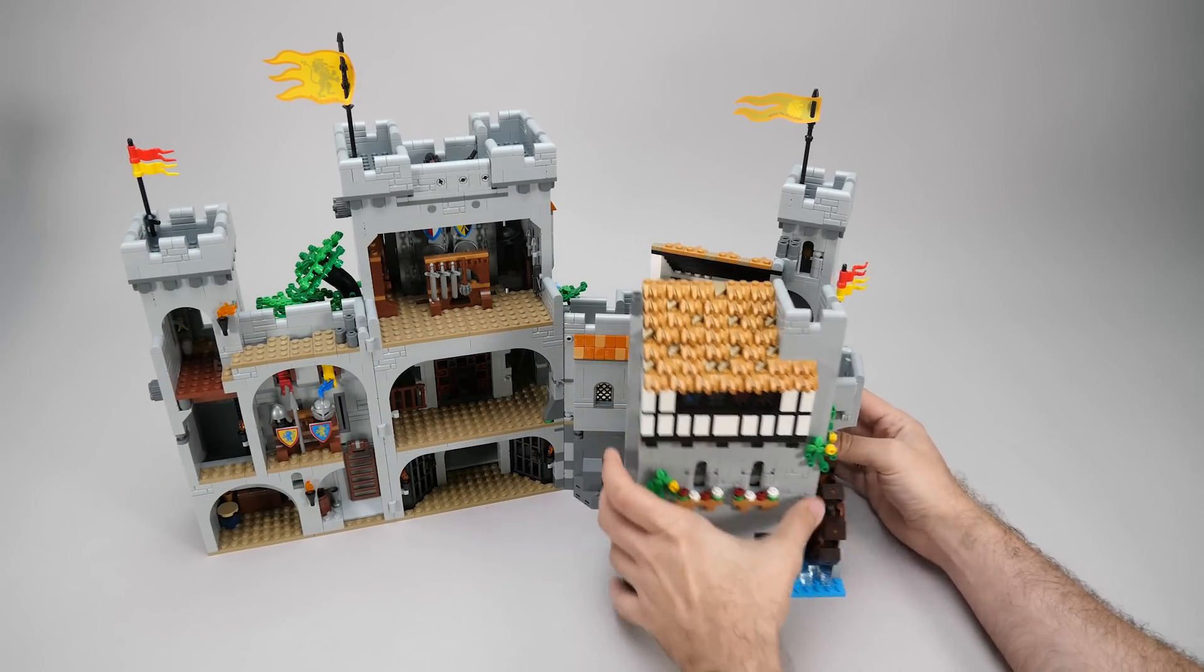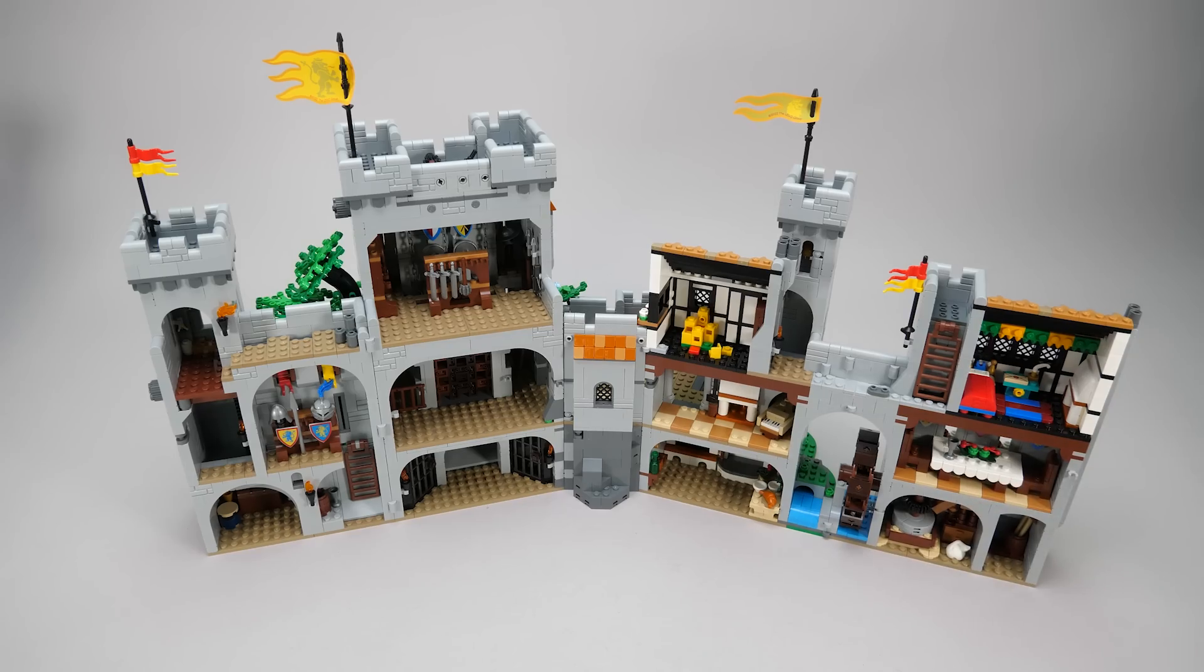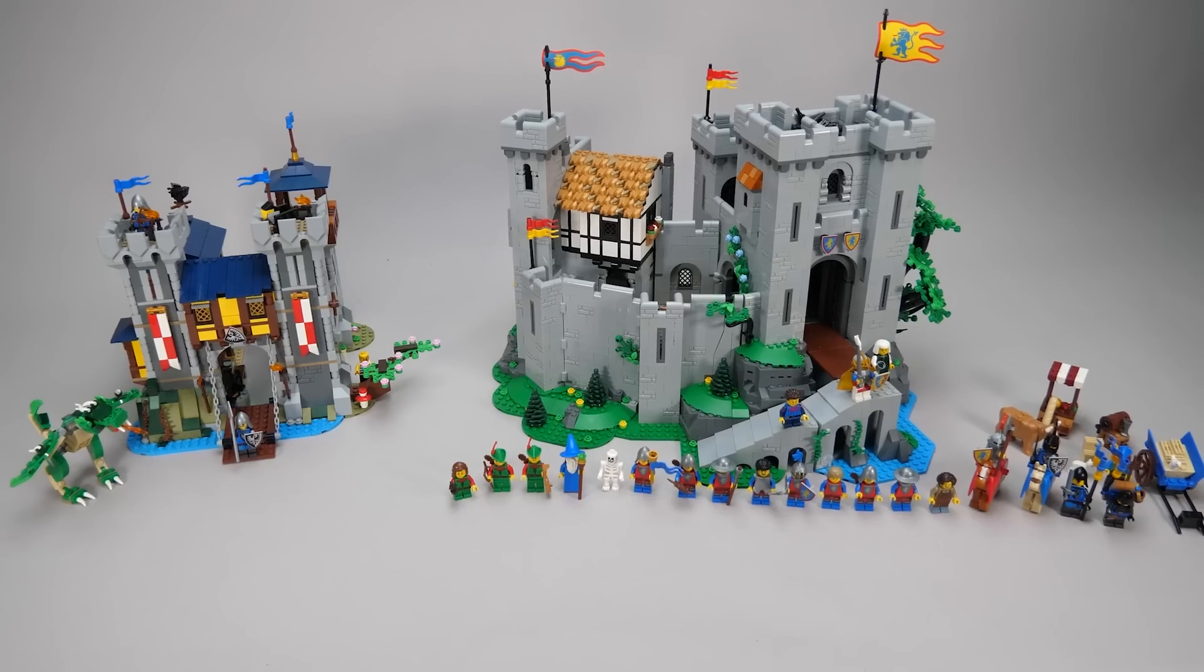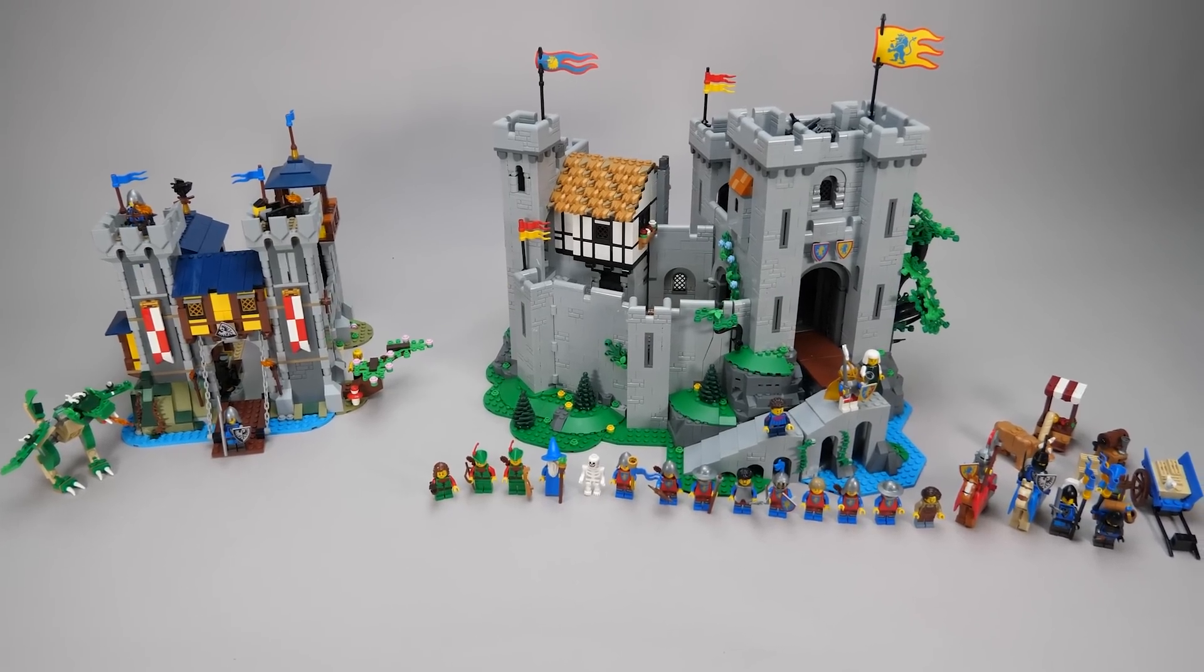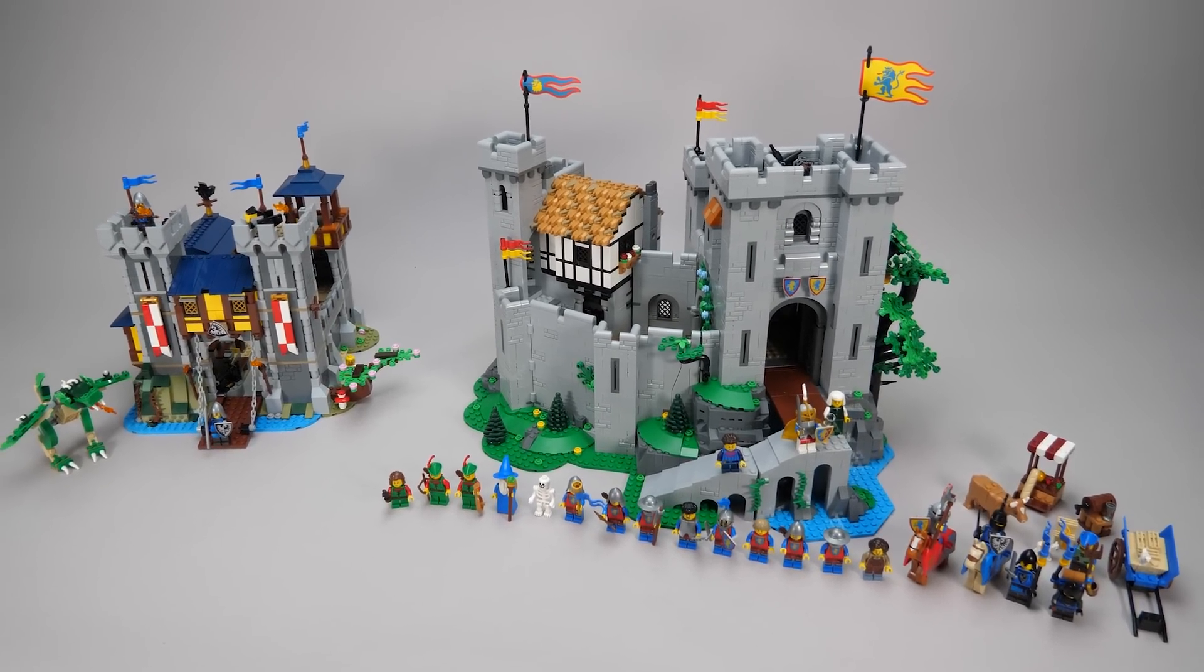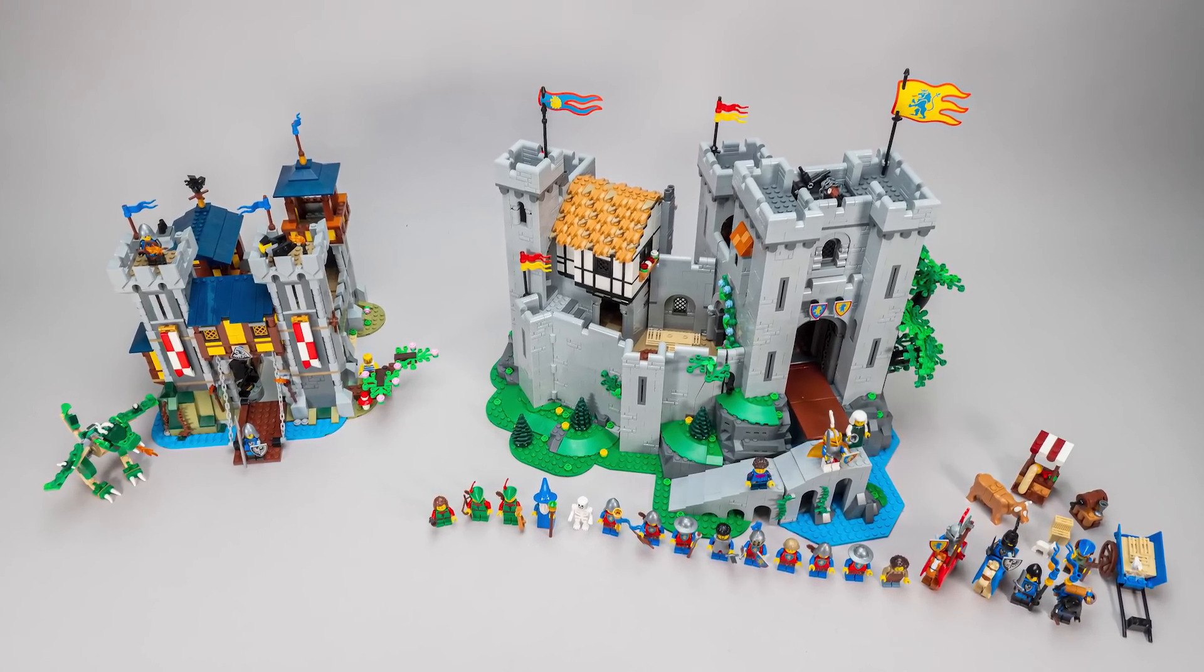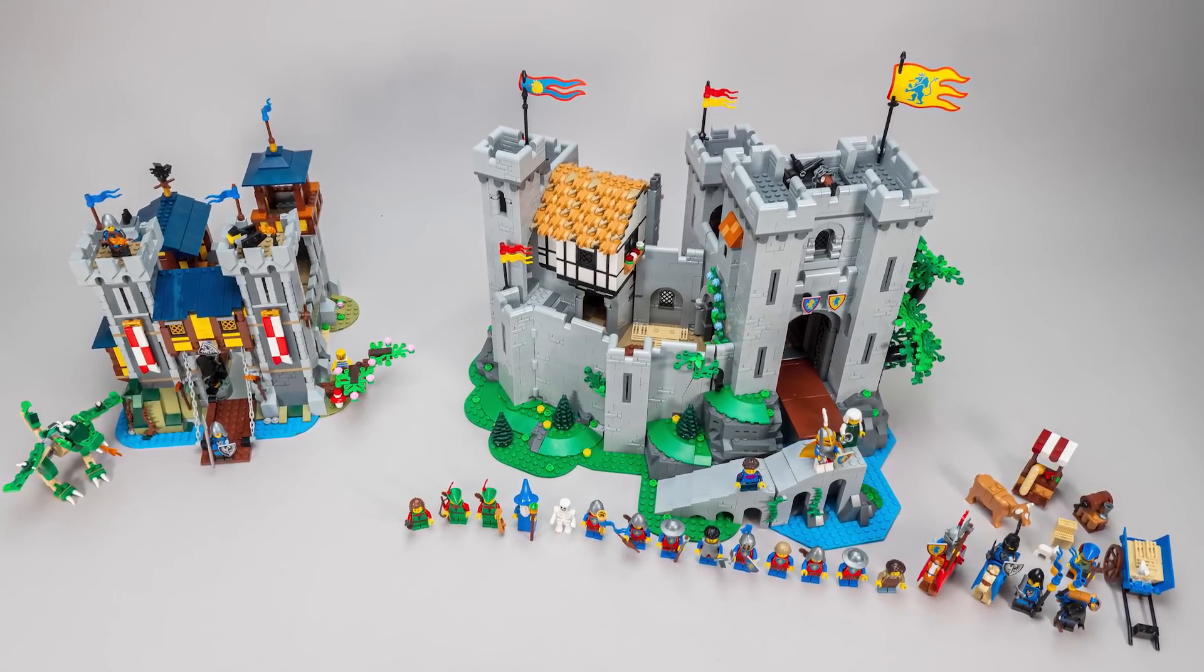You could see most of the interior details during the building, but once everything came together it looks like a medieval dollhouse. Going back to the sheer size of the build and the amount of minifigs included, here's a quick comparison with the Creator 3 in 1 medieval castle set. That one is dwarfed by the new castle, and we get a literal army of minifigures this time.